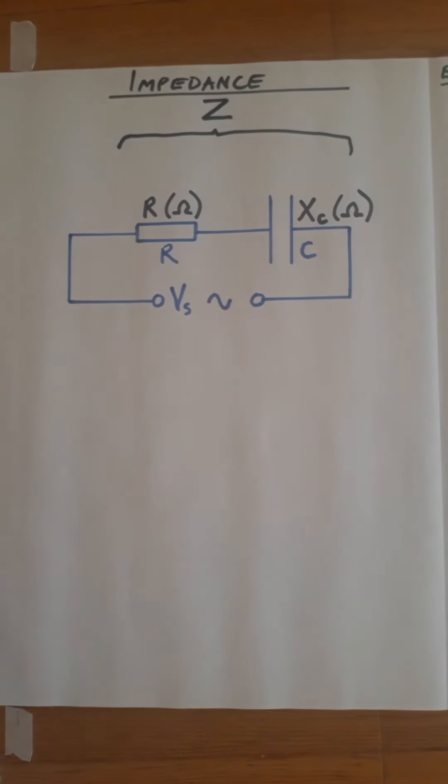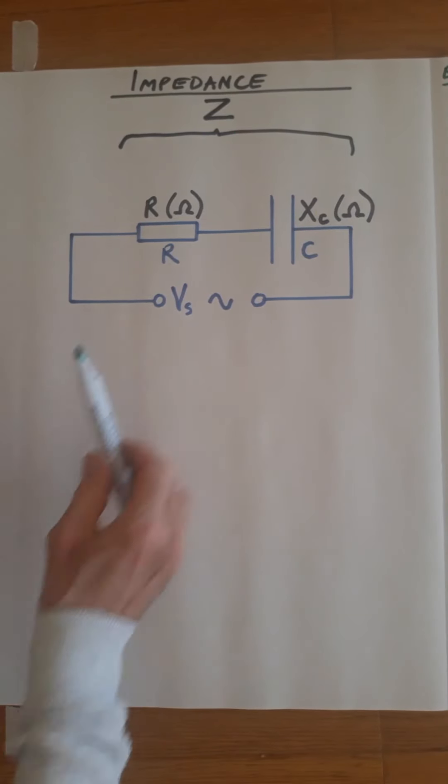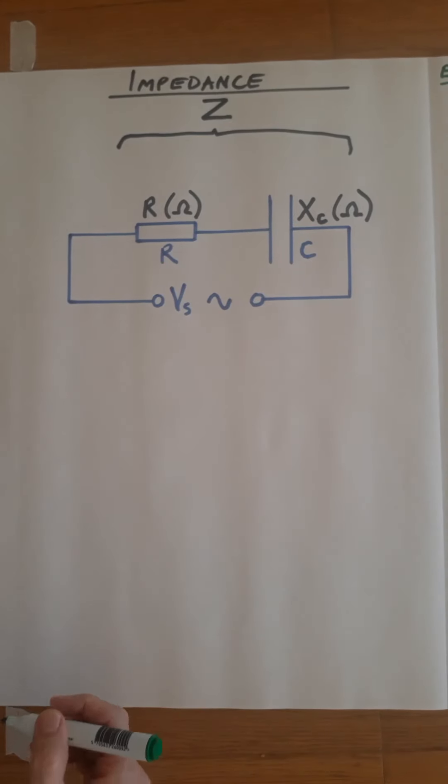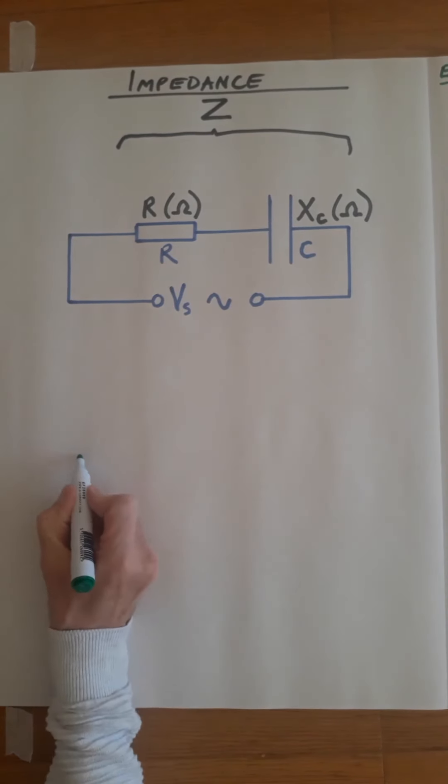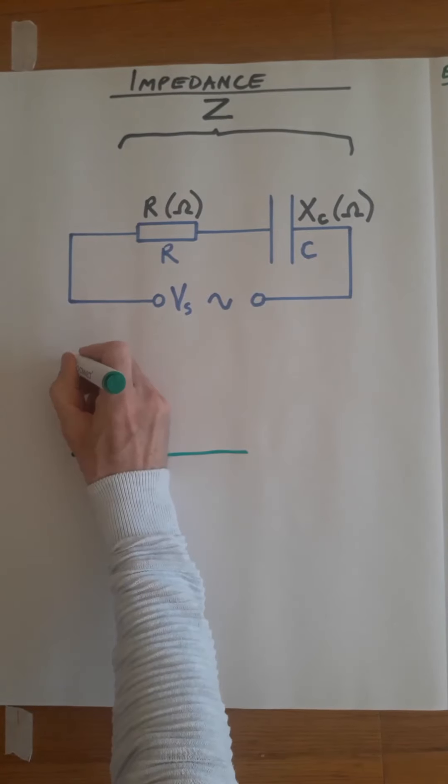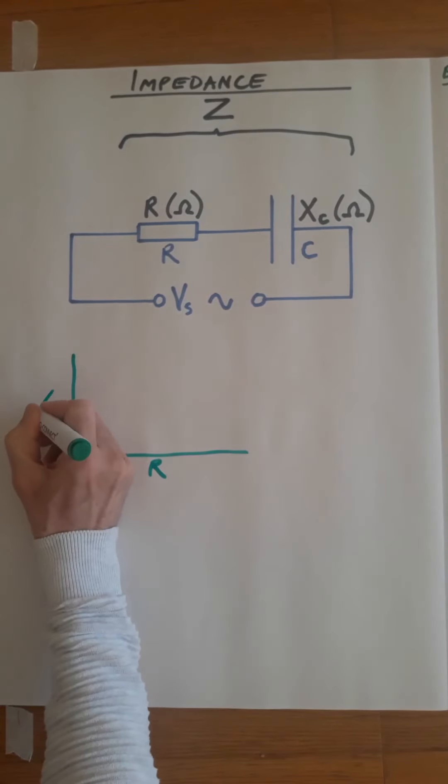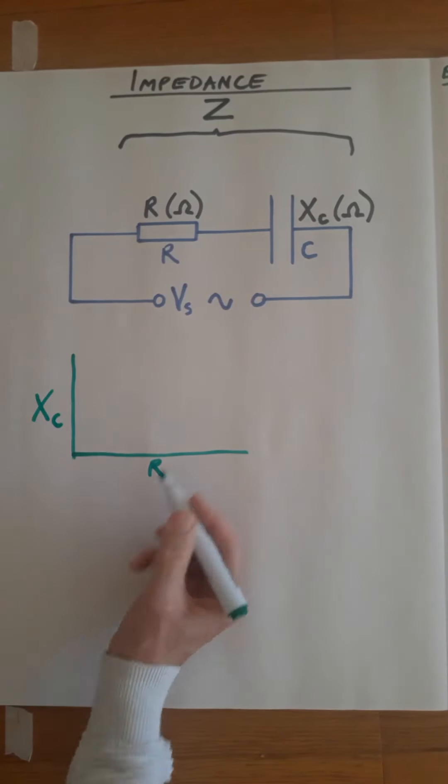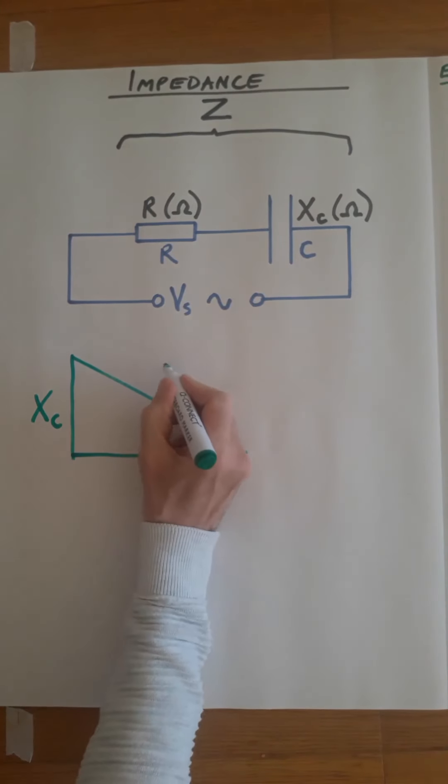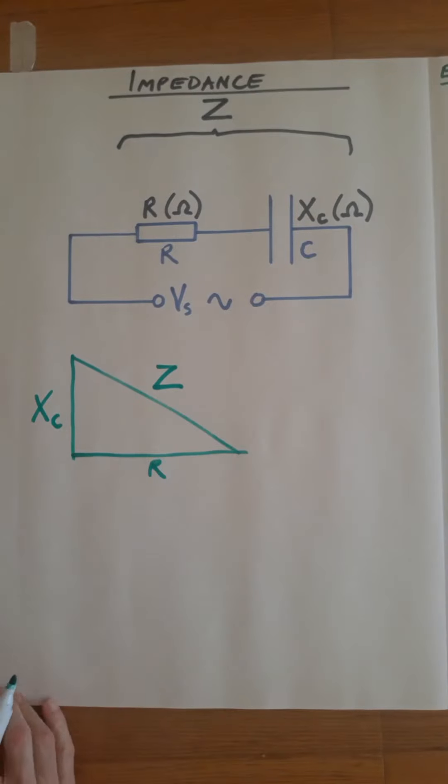So once again, if we consider the resistance, the reactance, and the impedance, we can produce a triangle. Resistance is always horizontal. The reactance is 90 degrees shifted from it, so there is Xc, and our result is impedance.